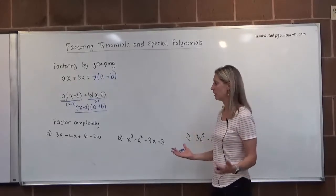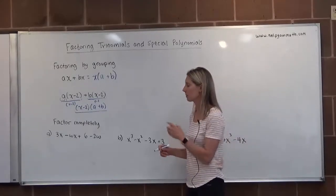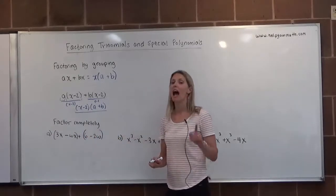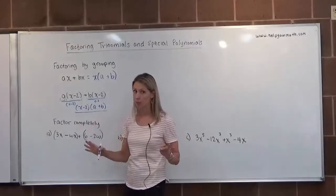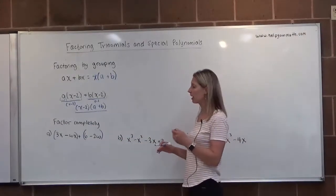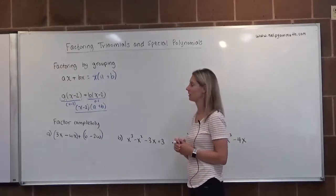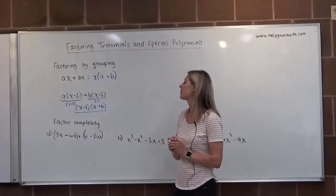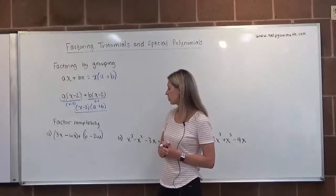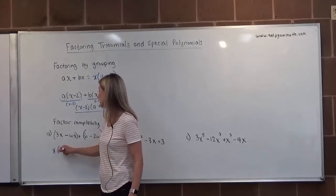Let's look at some examples of factoring by grouping. For example A, we have 3x minus wx plus 6 minus 2w. We group the first two terms together and the second two terms together. When grouping the second two terms, if there's a plus sign between the groups, all is well — it doesn't change anything, so 6 stays positive and 2w stays negative. In the first grouping, 3x and negative wx have a greatest common factor of x. We factor out x and are left with (3 minus w) inside parentheses.